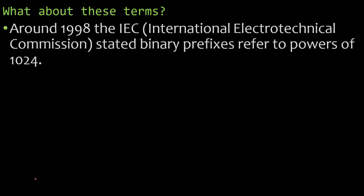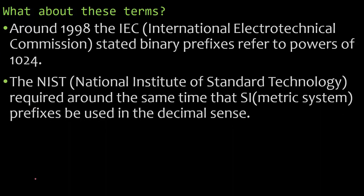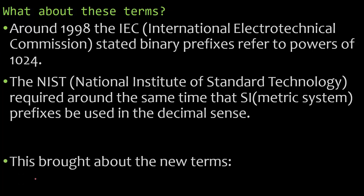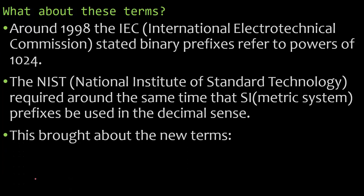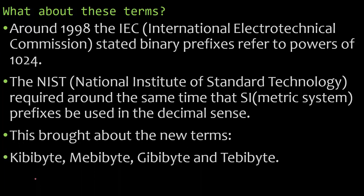Around 1998, the International Electrotechnical Commission stated binary prefixes refer to powers of 1024. The National Institute of Standard Technology, around the same time in the U.S., declared that the metric system prefixes should be used in the decimal sense. So this brought about those new binary terms: kibibyte, mebibyte, gibibyte, and tebibyte.